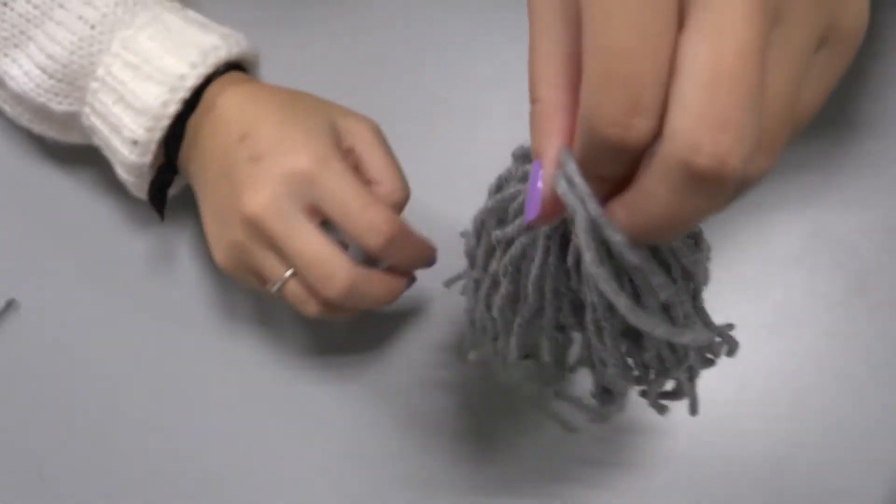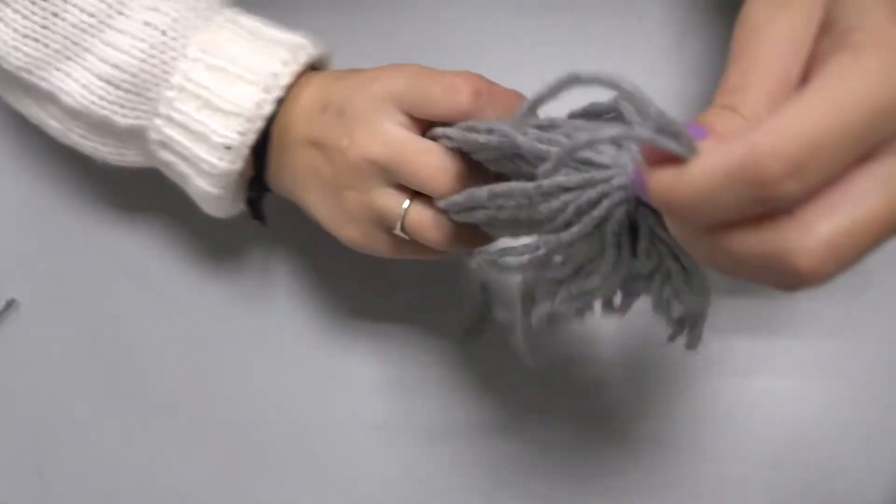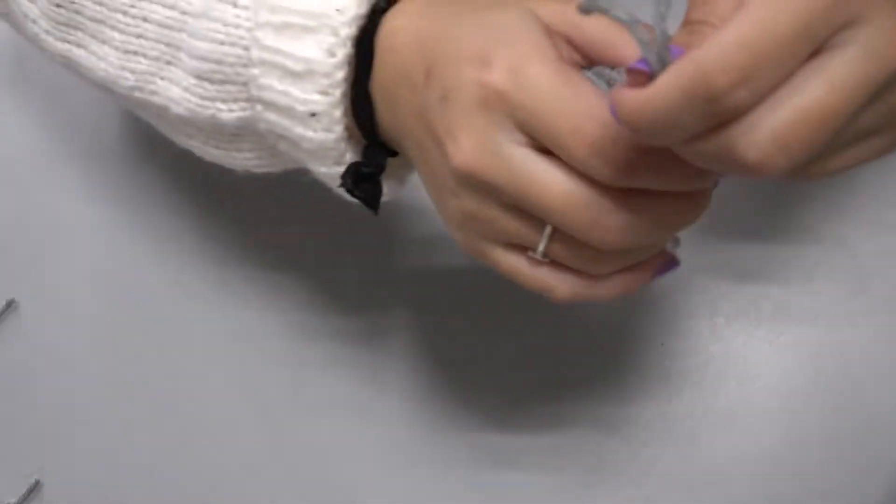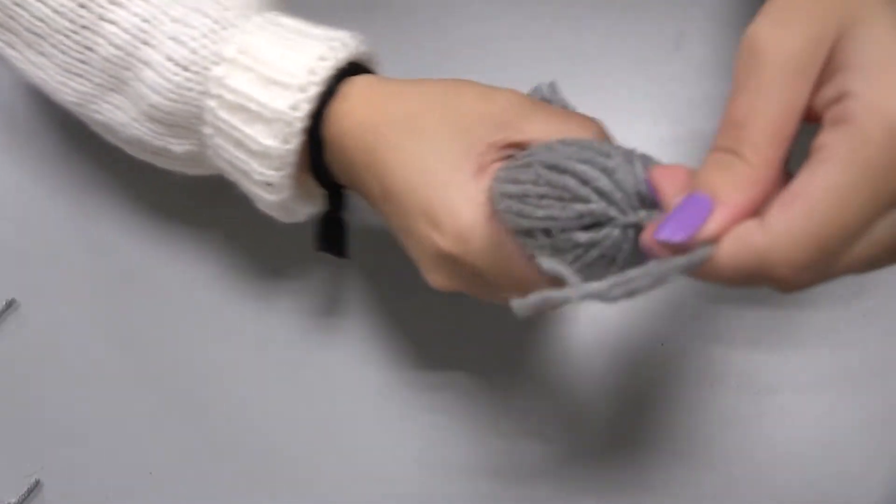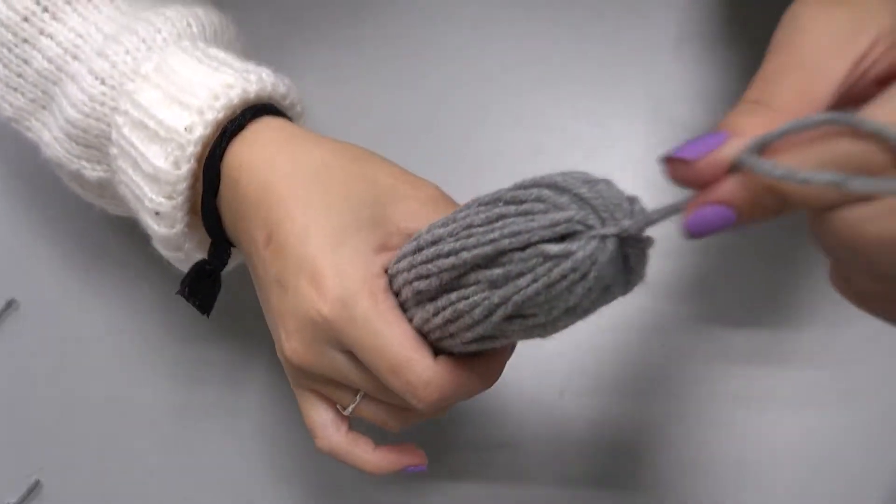So it kind of looks like that. And then all your little small pieces, if you have any, will fall out. So you can just throw those away. And then you kind of want to smooth it.